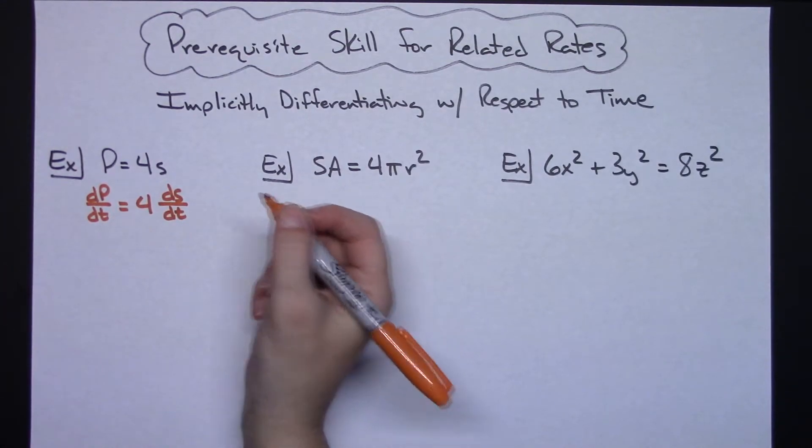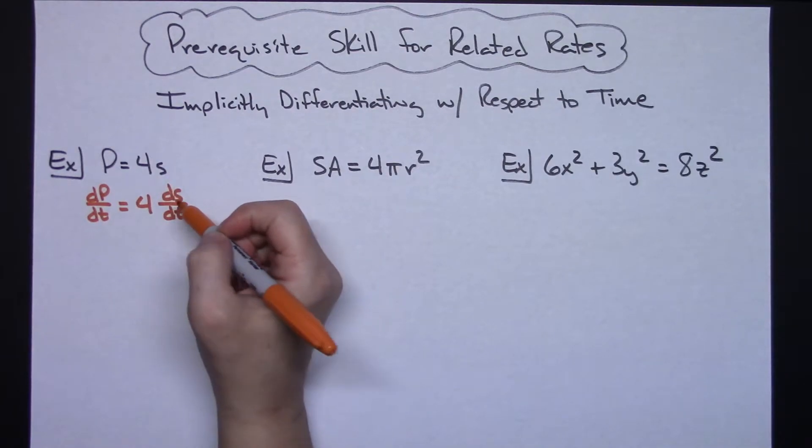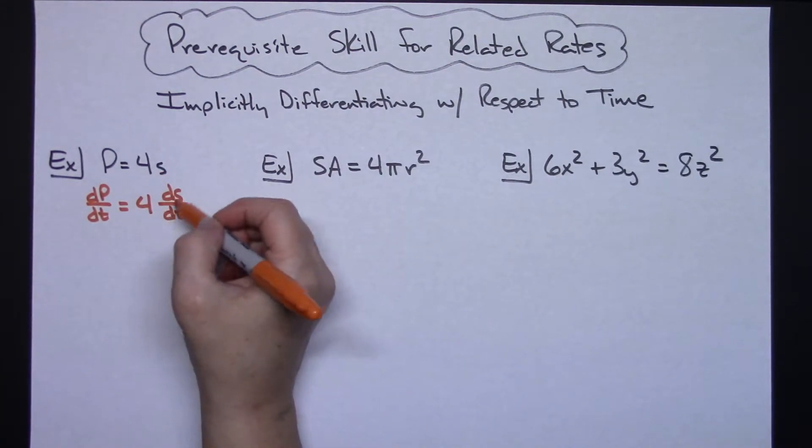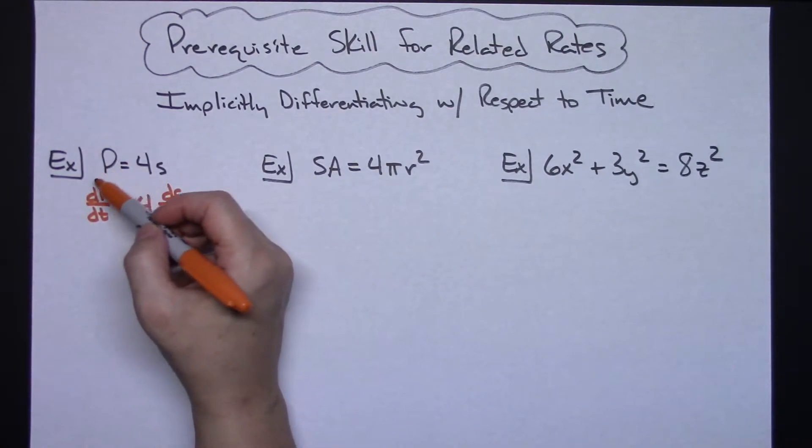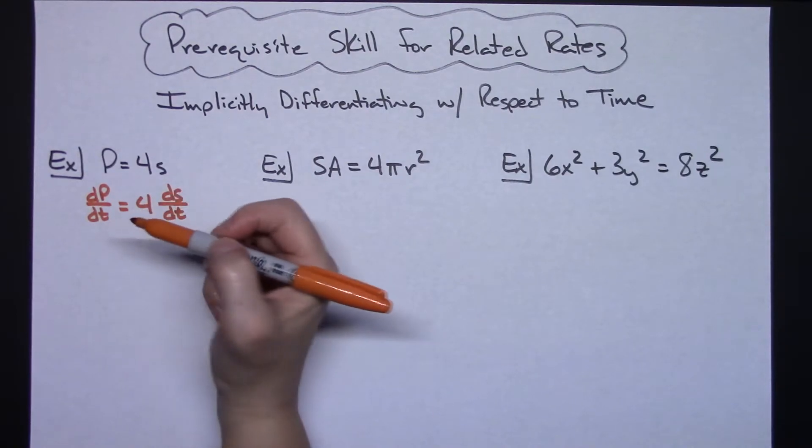Differentiating with respect to time includes a chain, so 4s goes to 4 and then include the chain with respect to time. Differentiating 1P goes to just 1 and then the chain dP/dt.